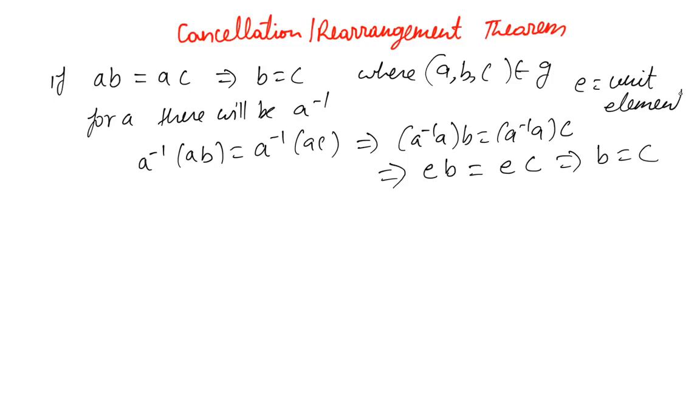So this is called the cancellation theorem. There's one more theorem called the rearrangement theorem. Let's say there's a group which is E, A1, A2, and so on up to AK, and this is nothing but group G. Then if you multiply